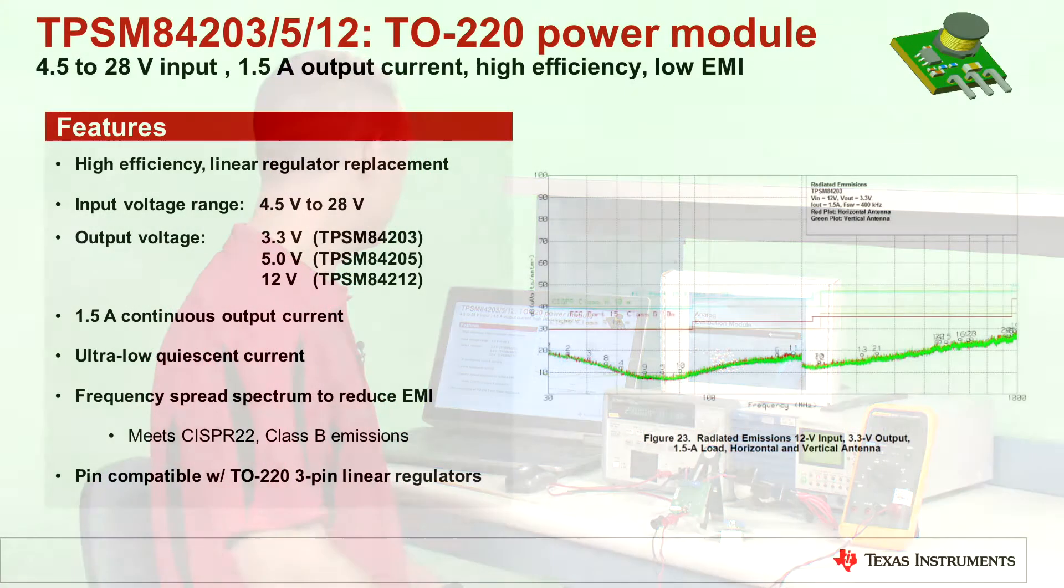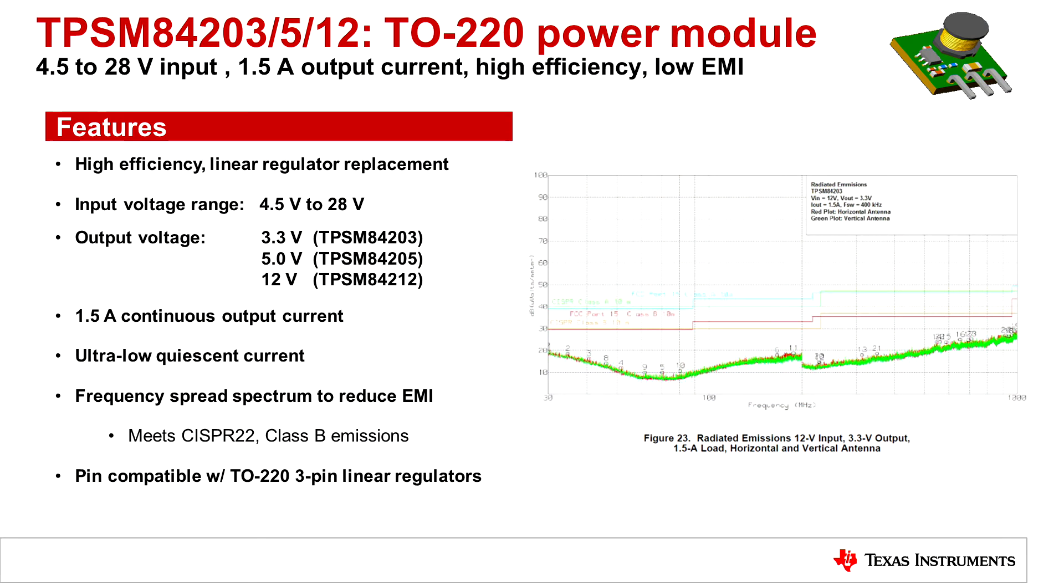So let's look at some of the features of this device. This device is part of a family of three devices that are packaged in a TO-220 footprint. They're high efficiency linear regulator replacements.